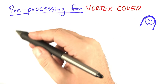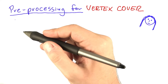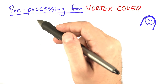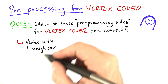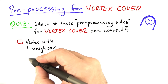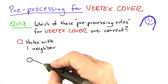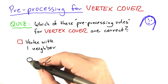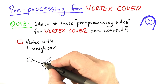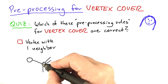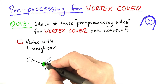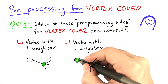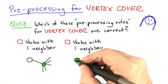I am going to give you a couple of options of potential ideas for preprocessing. If there's a vertex with just one neighbor — a vertex connected to another vertex that is possibly connected to more vertices, but this one is only connected to that one — should we automatically take this vertex into the vertex cover, or should we automatically take the other vertex into the vertex cover?